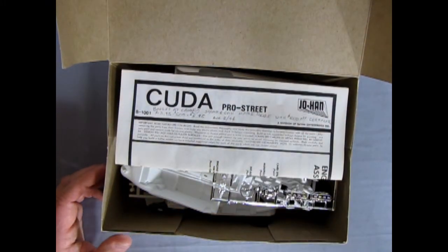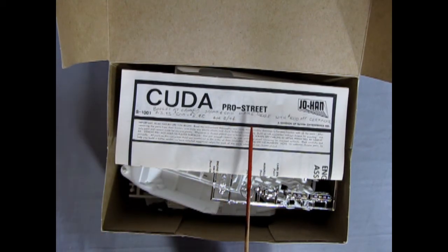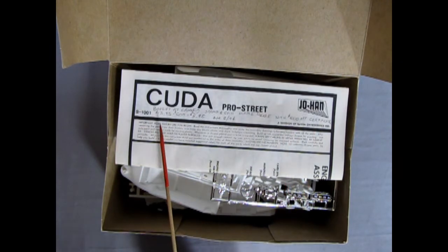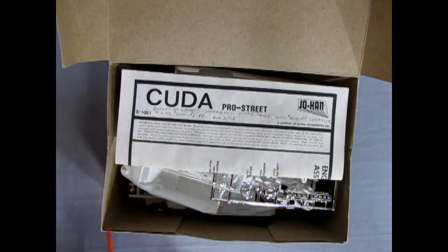There's our instruction sheet and it says, I bought this at Cameo Stamp and Coin, Maple Ridge, British Columbia with a $5 off certificate. $13.95 knocked off five bucks. Made it an $8.95 model kit. August 6, 1994.